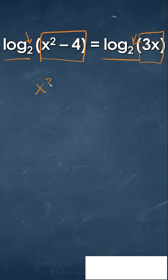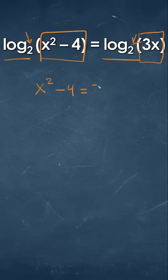So that would mean that x squared minus 4 is going to be equal to 3x. We can move this 3x over to the other side. That would give us that x squared minus 3x minus 4 is equal to 0.